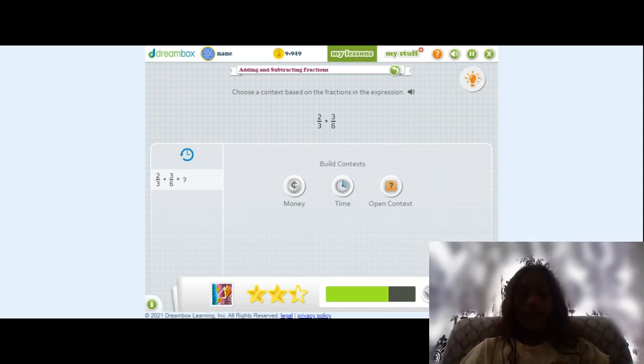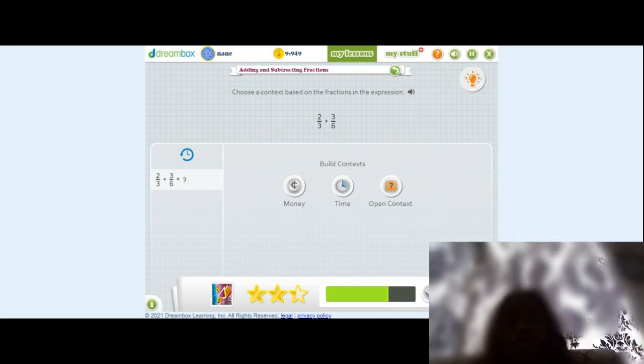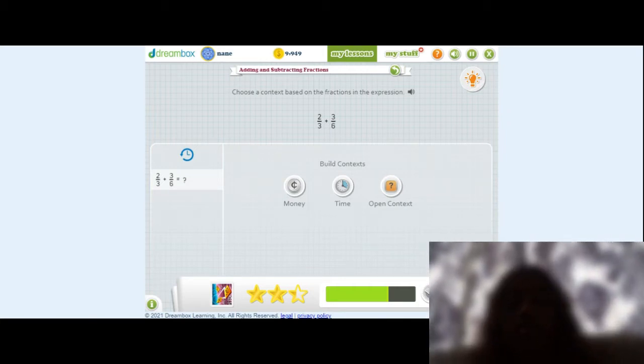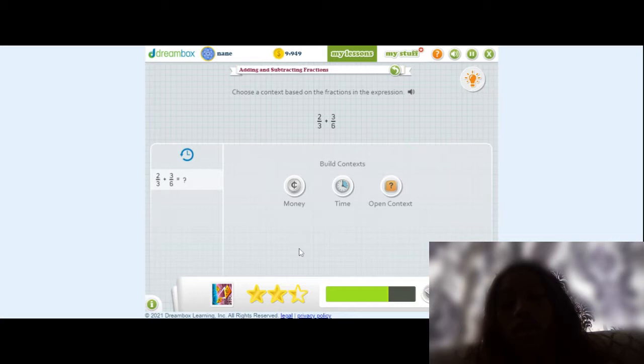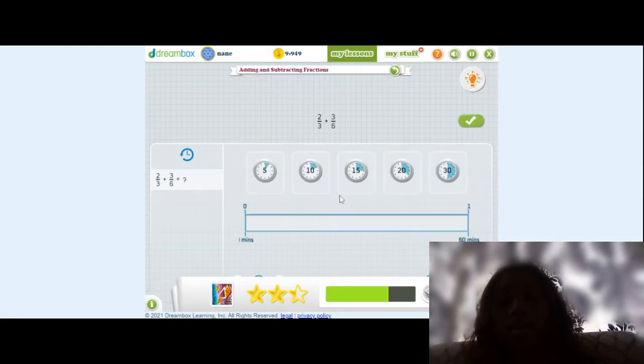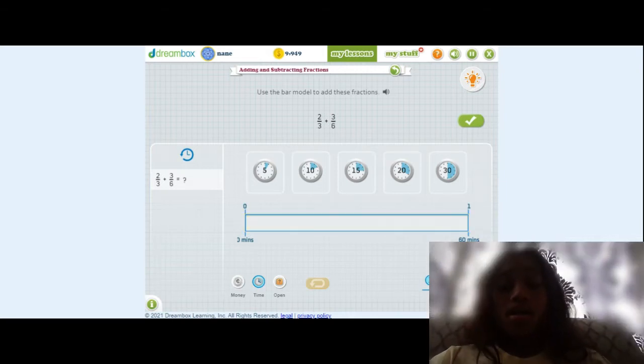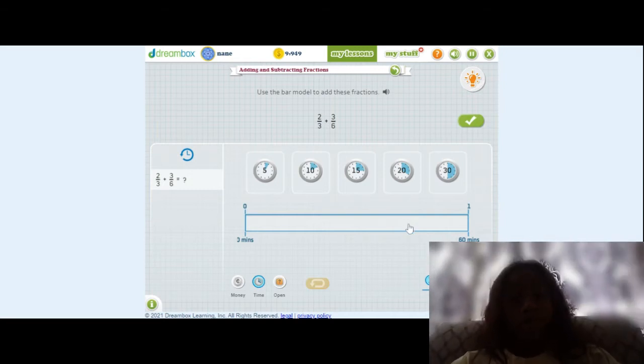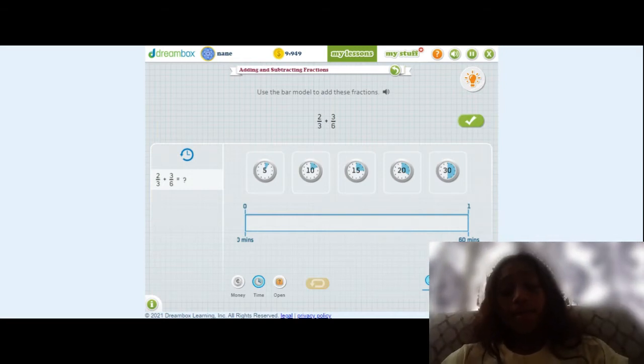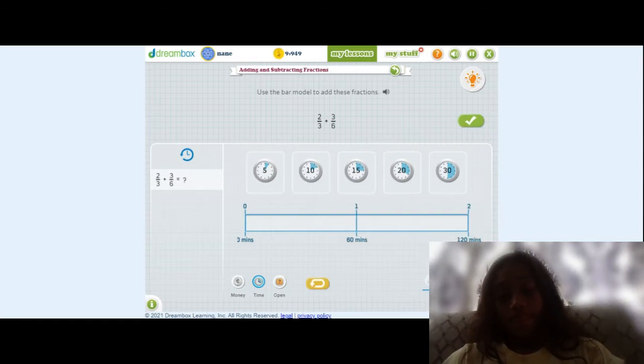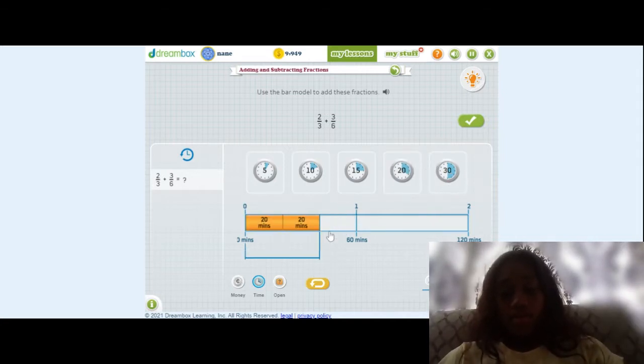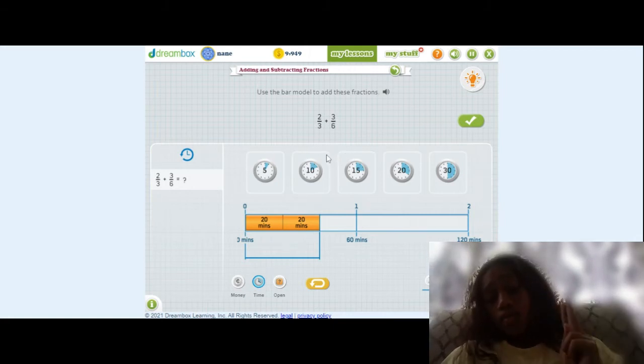So it says, choose a context based on the fractions in the expression. So two-thirds plus three-sixths. We have to add those. We can do it in money, time, or we can do our own context. So I'm just going to use time because I know that two-thirds, so one-third is 20, so two-thirds would be 40.